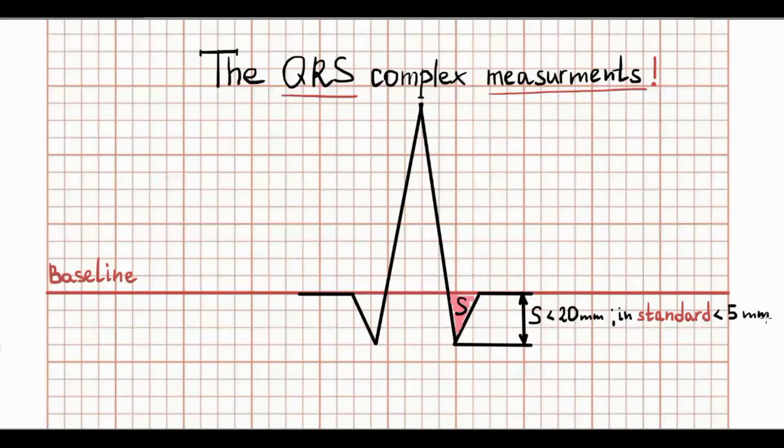Nevertheless, in AVR, S wave is prominent. This is caused again by the axis of AVR lead. And in this case, S wave describes the main mass ventricular depolarization.